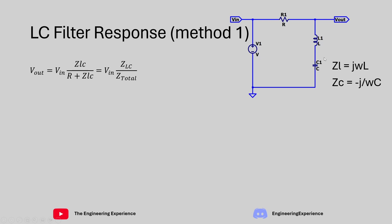So the impedance of LC divided by the total impedance of the circuit which is R plus the impedance of LC. So rewriting that I've just put down that V out is equal to V in multiplied by Z LC divided by Z total.